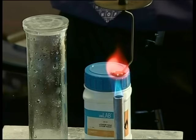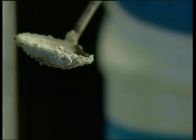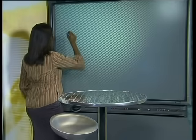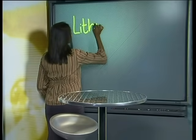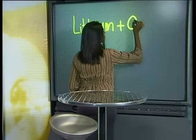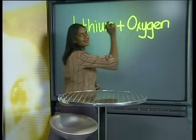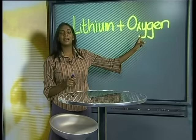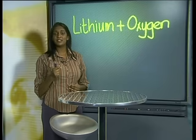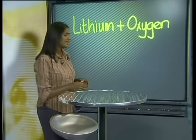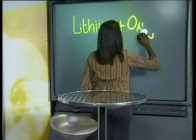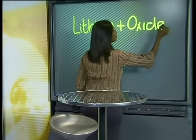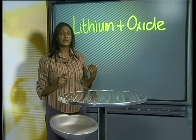Let's begin with lithium. Lithium burns with a pinkish red flame. In oxygen, it burns more vigorously and with greater brightness. The product formed is a white powder. When lithium and oxygen react, the metal name is written first and the non-metal name second — the name of the second element is changed slightly from oxygen to oxide. So the product formed during this reaction is lithium oxide. We will retain the lithium oxide for further tests in later lessons.